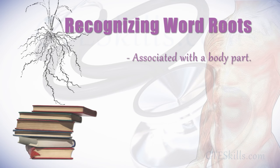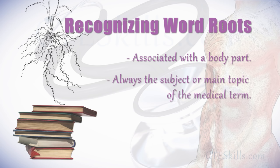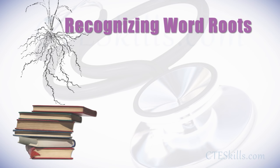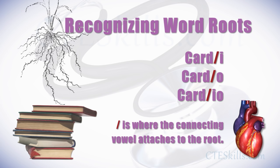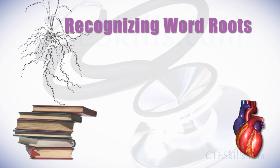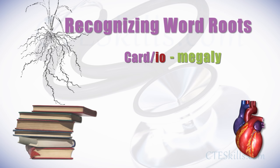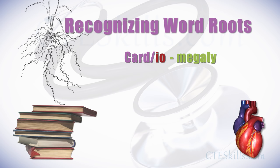Root words are frequently associated with a body part, and a word root is always the subject or main topic of the medical term. For example, the word root for heart is 'cardi', 'cardo', or even 'cardio'. The slash is where the connecting vowel attaches to the root. An example is 'cardiomegaly'. The method for deciphering a medical term is to start with the last word part and work yourself through each element until you reach the first element, which would most likely be a prefix.